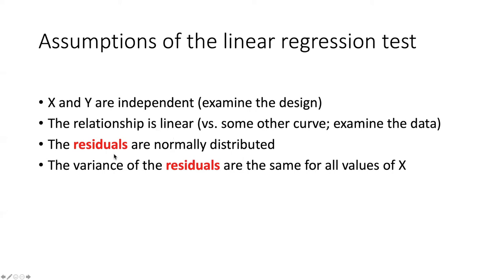The other two assumptions are similar to what we saw with the t-test because they involve a normal distribution and equal variance. But in this particular case, since we don't have two different groups, what are the things that need to be normally distributed? In the case of a regression, it's the residuals that have to be normally distributed, and the variance of the residuals have to be the same for all values of x.